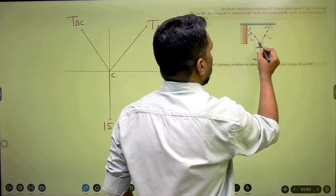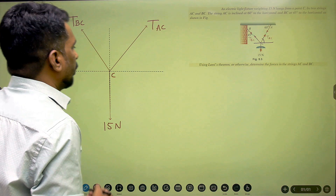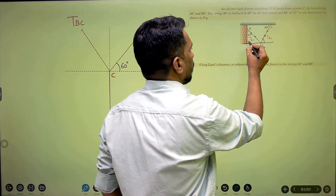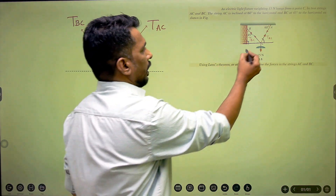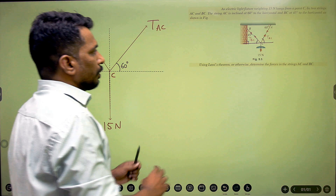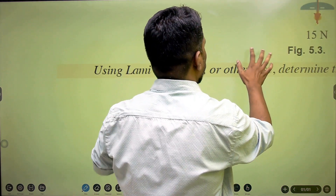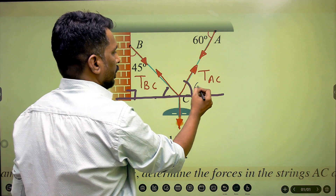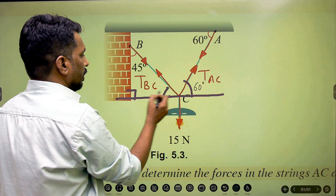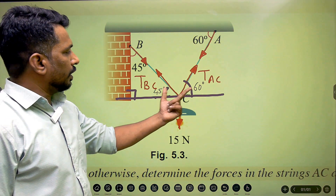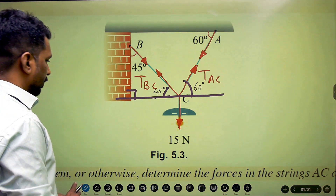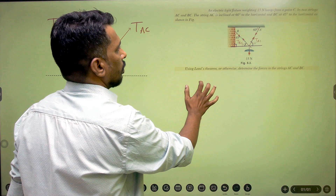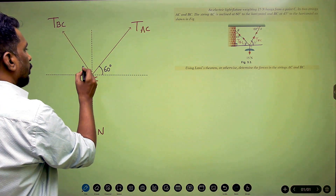Now I will show all the angles. TAC makes 60 degrees with the horizontal. For TBC, it is 45 degrees with the vertical; since the perpendicular is 90 degrees, the remaining angle with horizontal is also 45 degrees. Using alternate angles, with the horizontal we have 60 degrees for AC and 45 degrees for BC respectively.